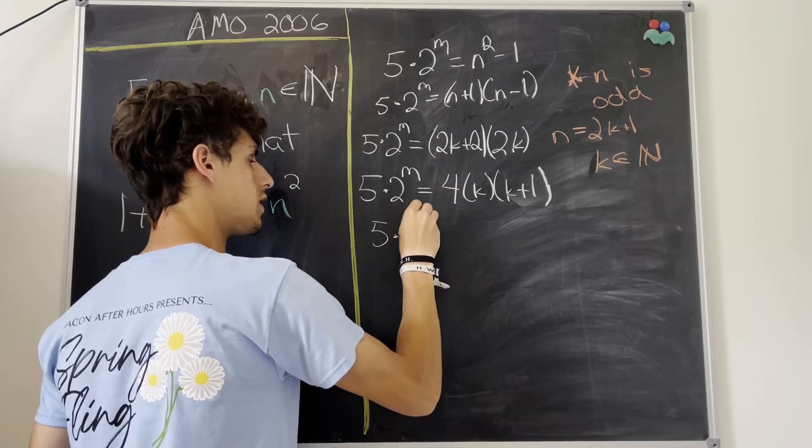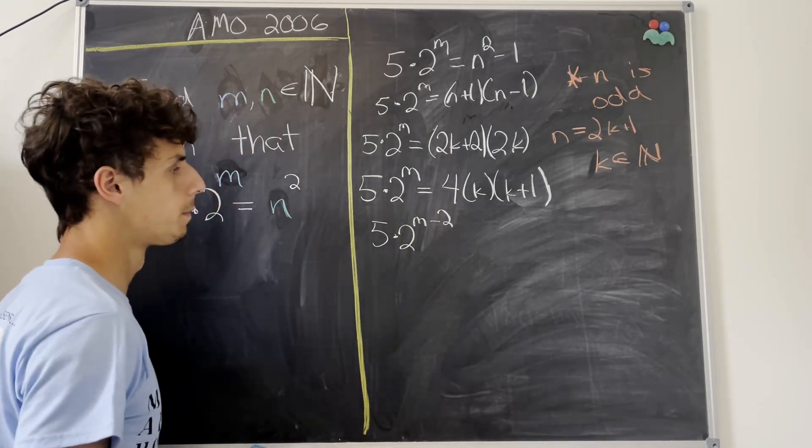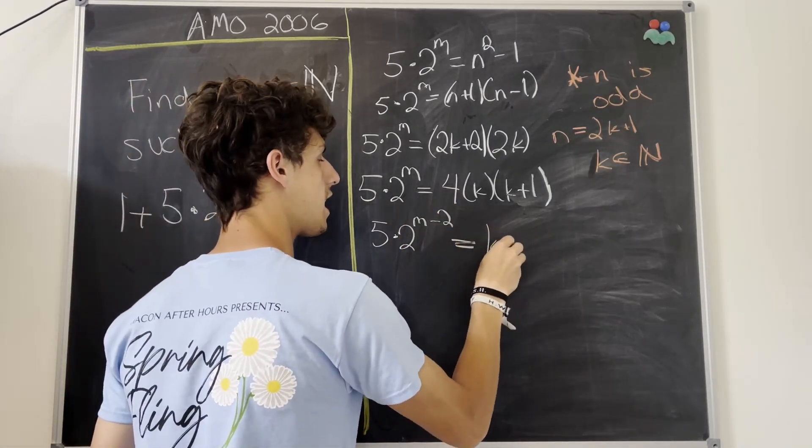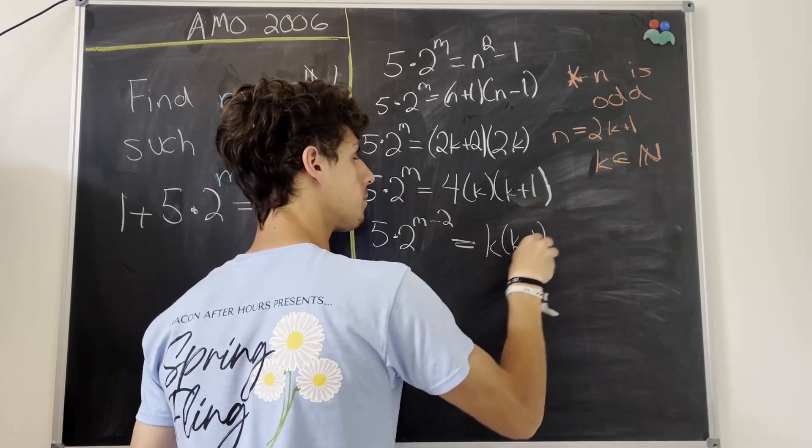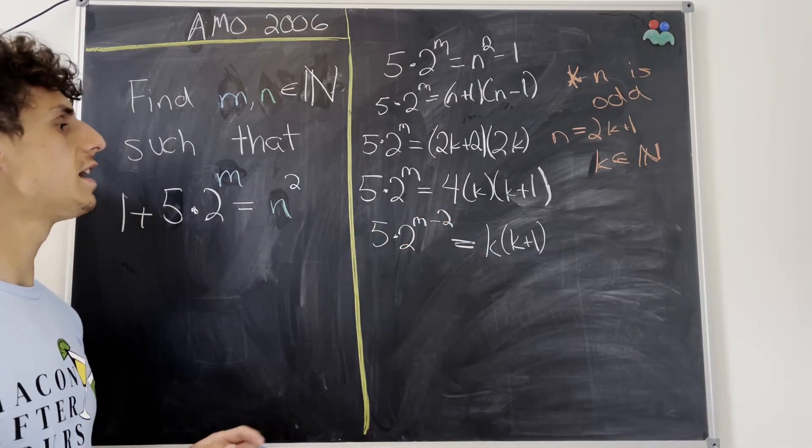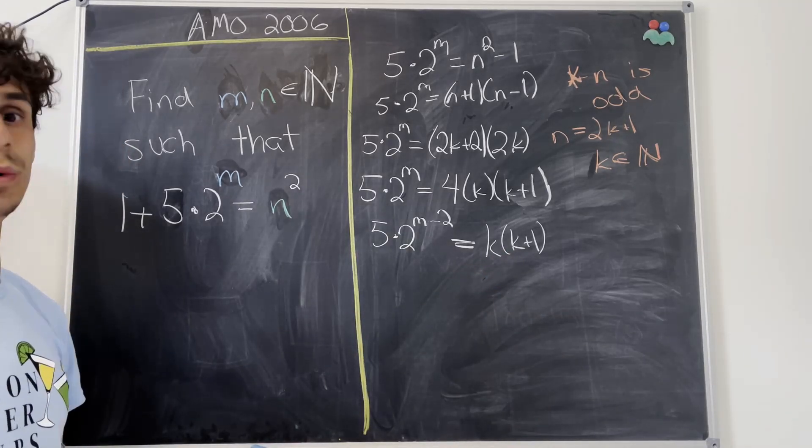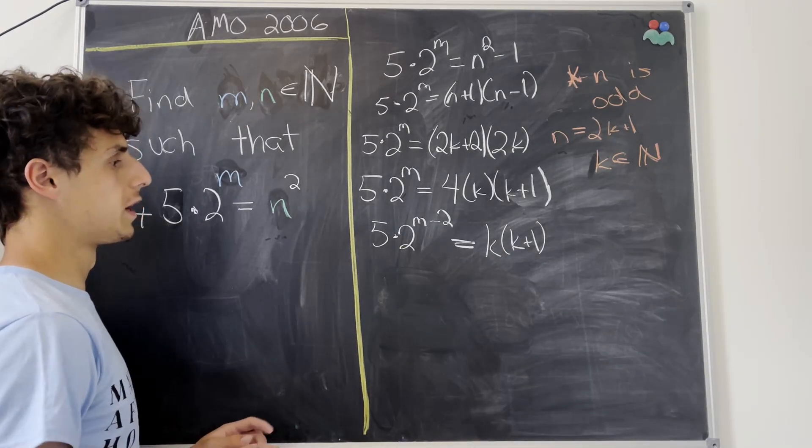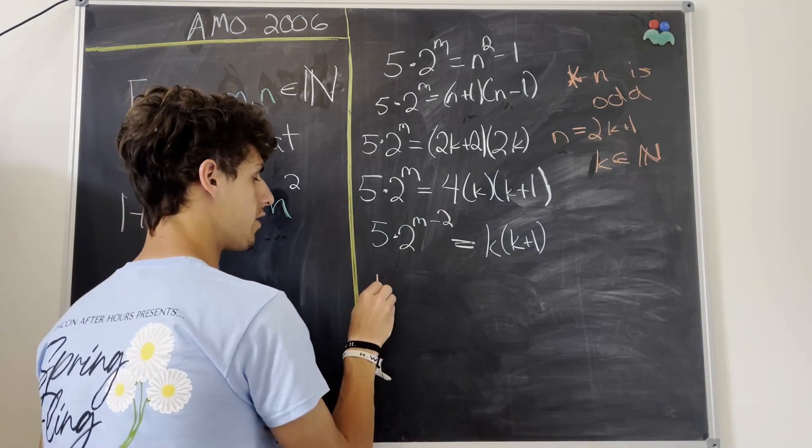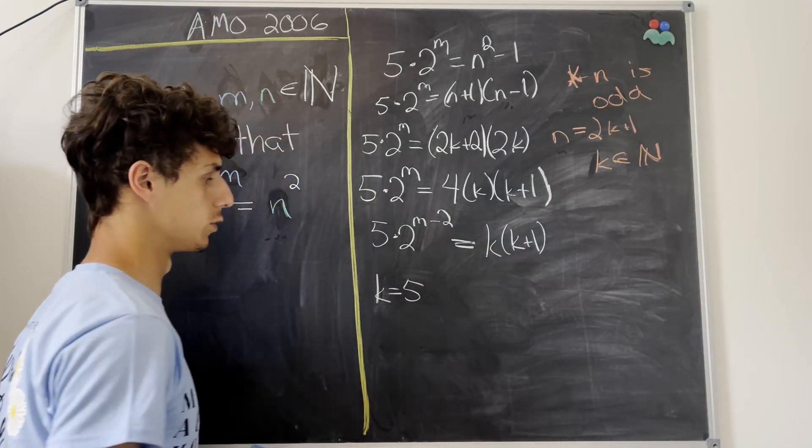So we'll have 5 times 2 to the m minus 2 equals k times k plus 1. But the only time that this is satisfied is when either k or k plus 1 is equal to 5. So let's split this into two cases, one where k is equal to 5 and one where k plus 1 is equal to 5.